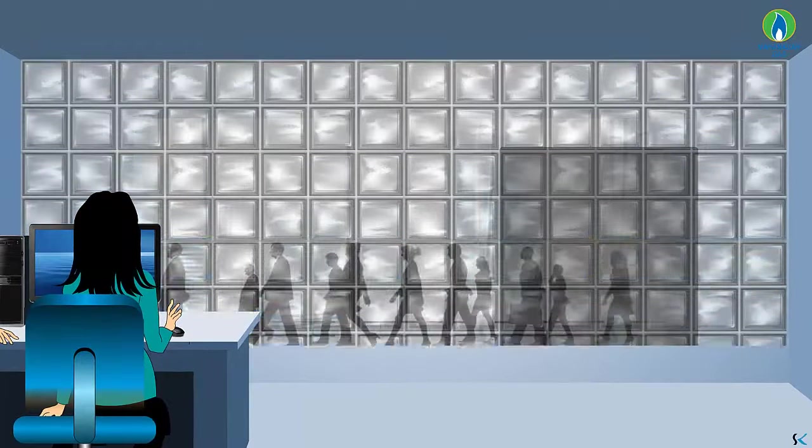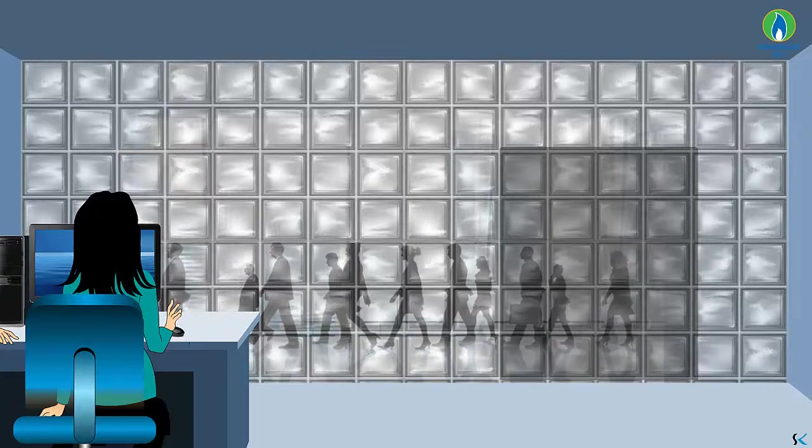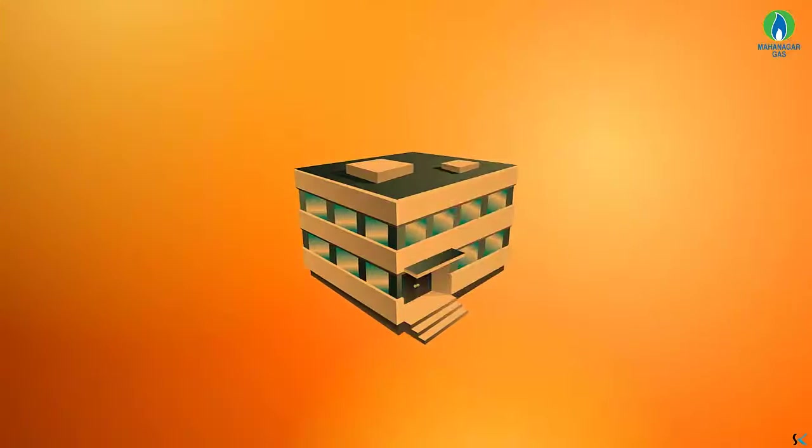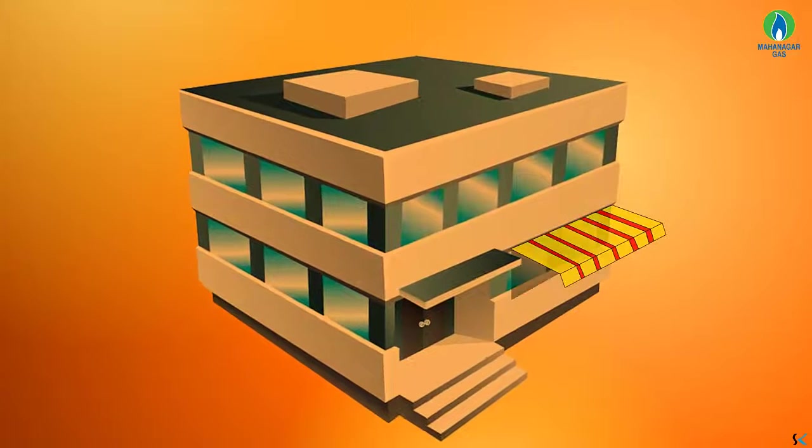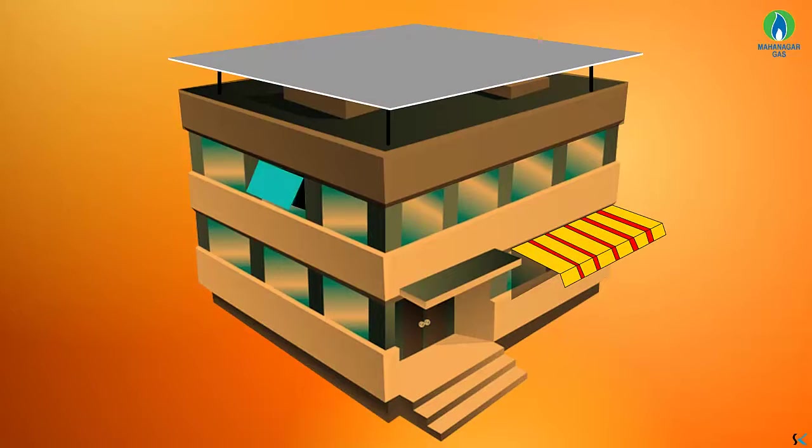Consider replacing exterior windows with insulated glass block. Consider tinted glass, reflective glass, coatings, awnings, overhangs, draperies, blinds and shades for sunlit exterior windows.